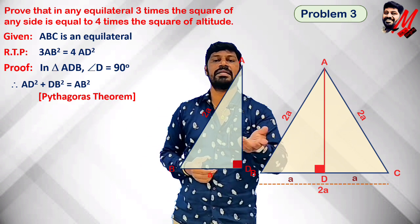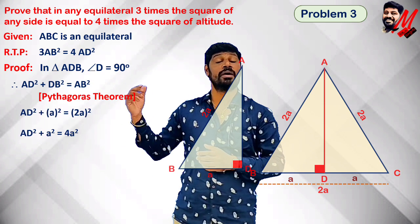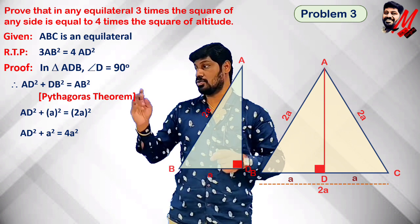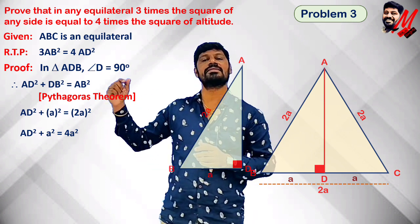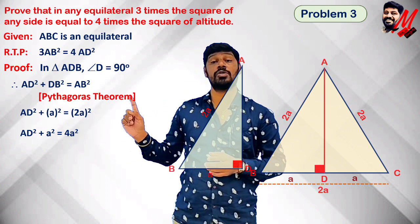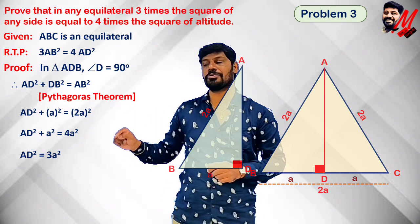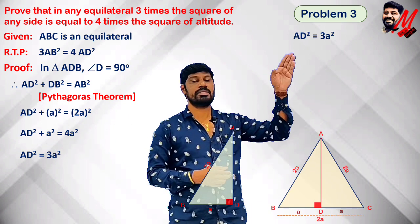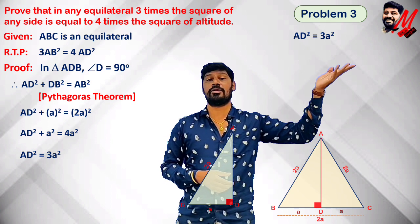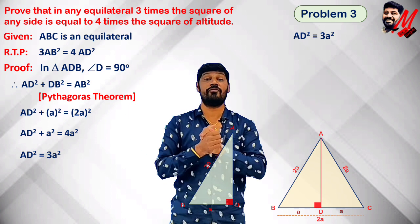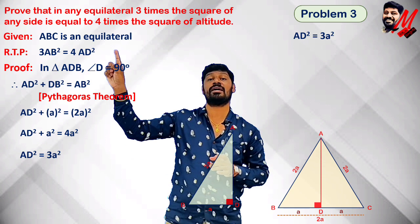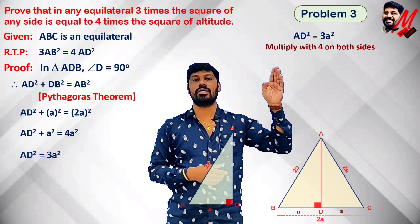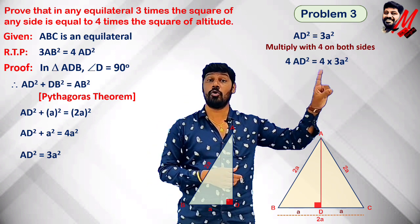So AD² + a² = (2a)² = 4a². Therefore AD² = 4a² − a² = 3a². Now, 4 times AD² is equal to 4 × 3a² = 12a².